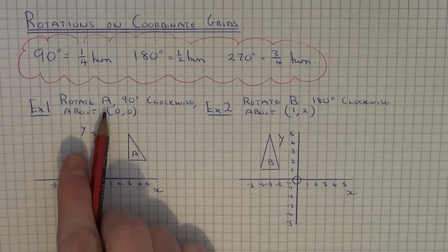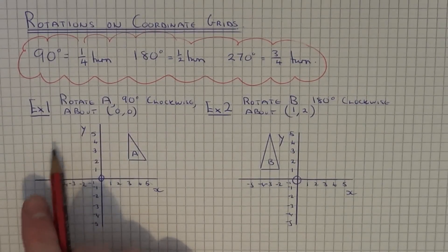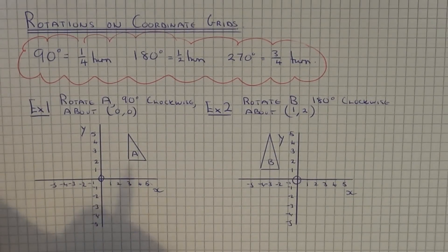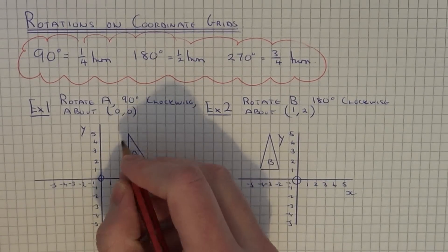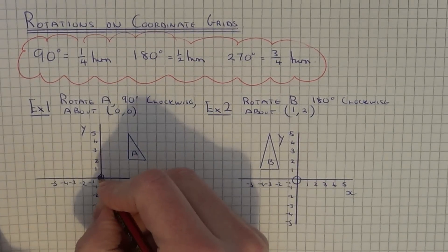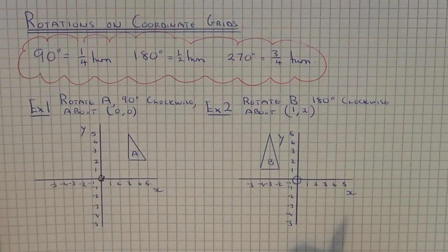We've got to rotate shape A 90 degrees clockwise about the point (0,0). The first thing you need to do is mark on the centre of rotation which is (0,0). That's the centre of the grid.